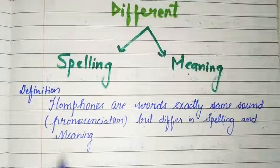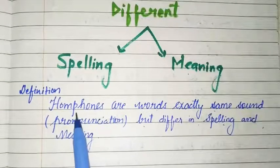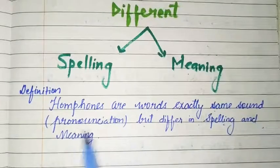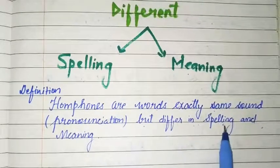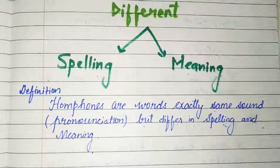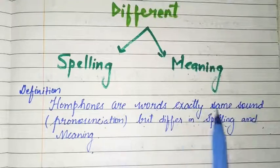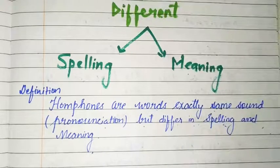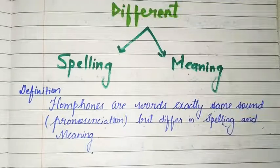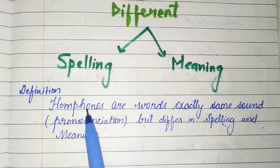Definition of homophones: Homophones are words with exactly the same sound pronunciation, but different spelling and meaning. Basically, aise words jinke sound pronunciation same hote hai, bolne aur sunne mein same lagte hai, but unki spelling aur meaning different hoti hai — unhe hum homophones kehte hai.